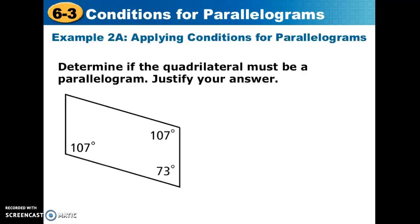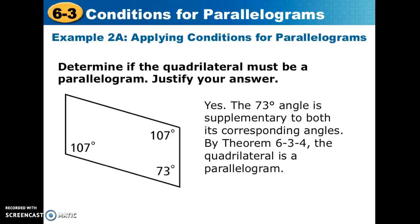In example 2, we want to determine if the quadrilateral is a parallelogram and justify our answer. We look for two pairs of opposite congruent angles. We have 107° and 107° — those are congruent. We also have 73°, so we need to check if the missing angle is also 73°. We can find it by doing 107 plus 73 to get 180, or 360 minus the three known angles — either way gives us 73°, so we can conclude it is a parallelogram.